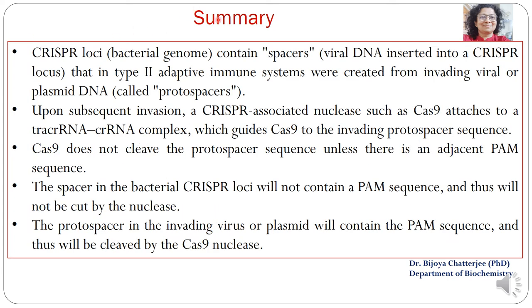In summary, the CRISPR loci present in the bacterial genome contain spacers. The viral DNA inserted into the CRISPR locus is known as a spacer. It is a type 2 adaptive immune system which is created from invading viral or plasmid DNA.